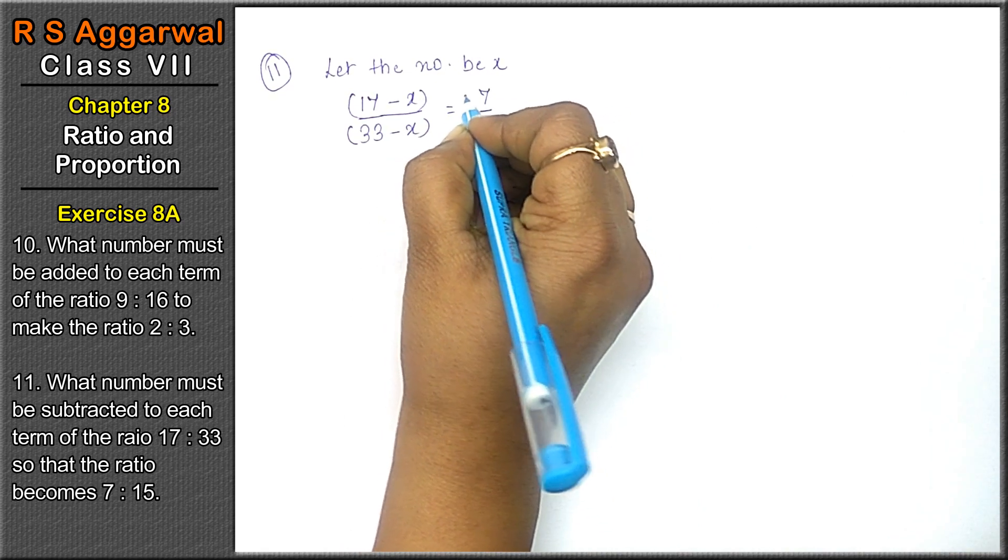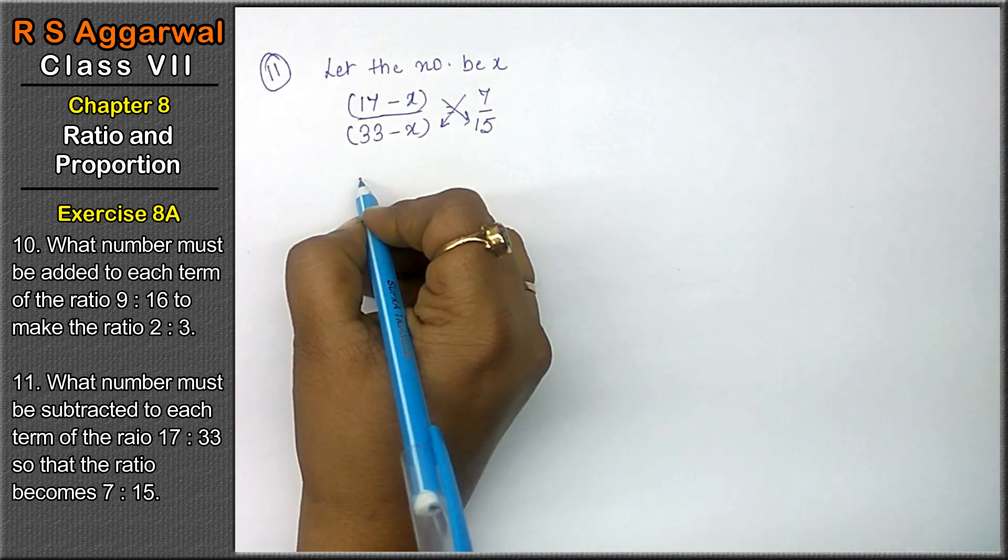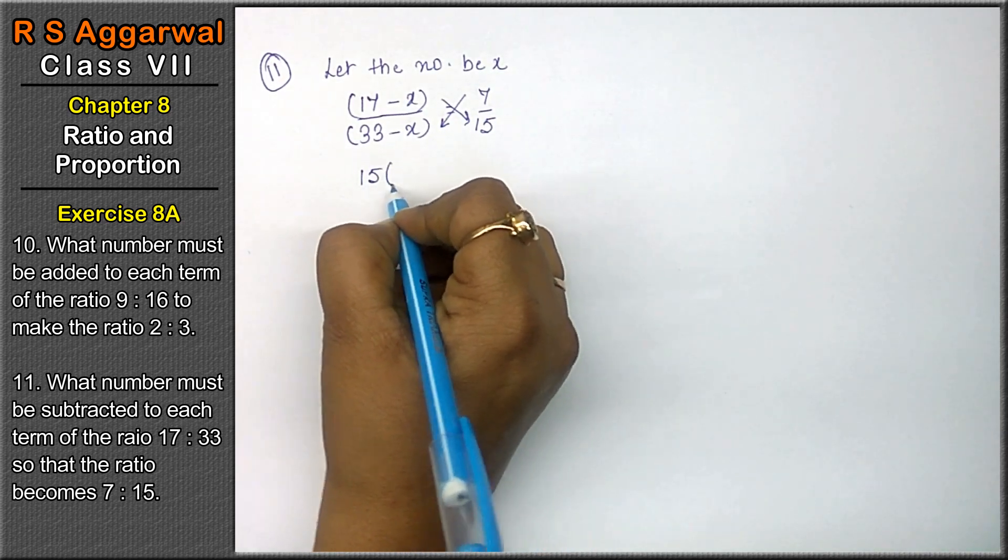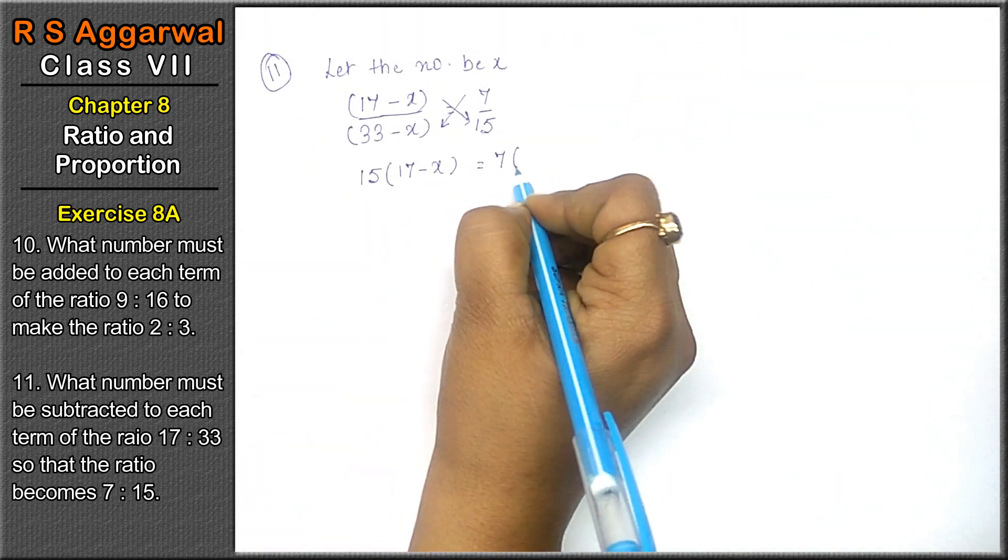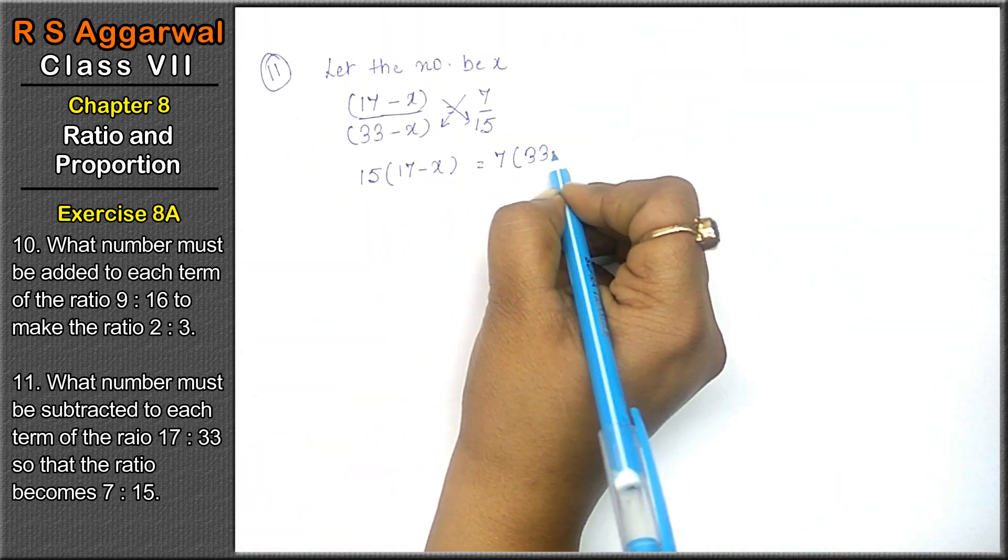Same case, cross multiply. What will this be? 15 into 17 minus x equals to 7 into 33 minus x.